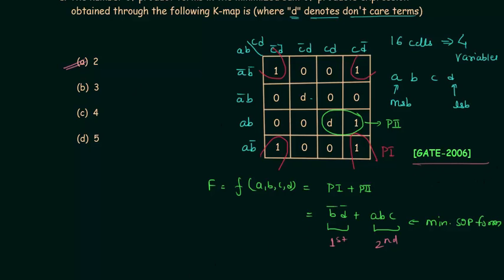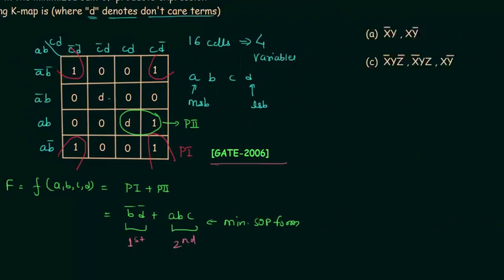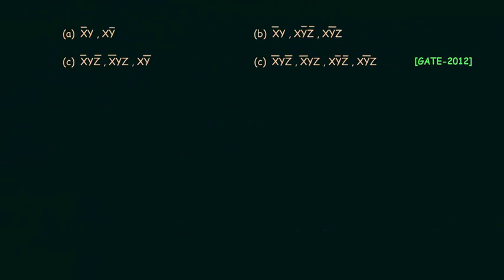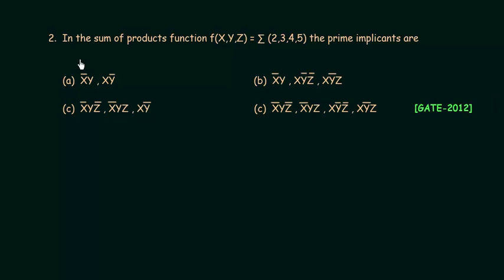Now we will solve the second problem, taken from the Gate 2012 exam. In the sum of products function F with variables X, Y and Z, where X is the MSB and Z is the LSB, the minterms are 2, 3, 4 and 5. We have to find the prime implicants. First, I will make the Karnaugh map. Since there are three variables X, Y and Z, I will make an 8-cell K-map.